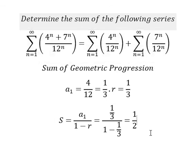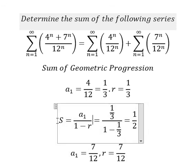Now let's go to the second one. a₁ equals 7 over 12, and r equals 7 over 12. Now we apply this formula.